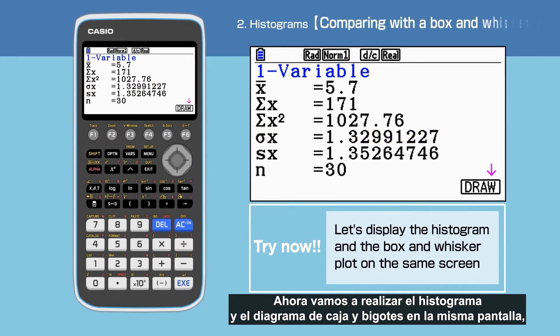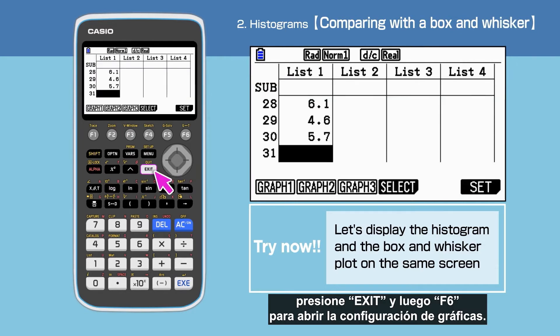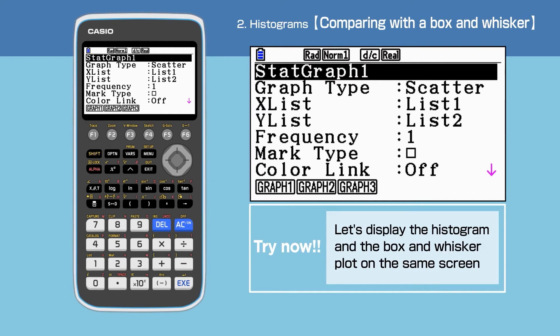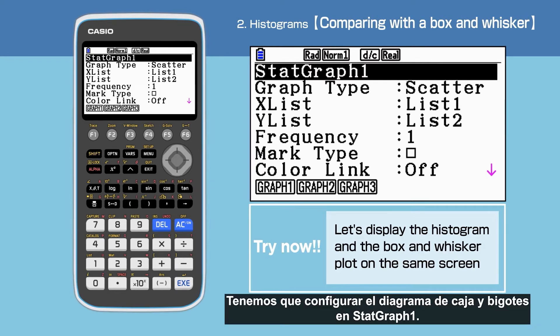Next, we will display the histogram and the box and whisker plot on the same screen. Press Exit, then F6 to open Graph setting. We set up the data for the box and whisker plot in Start Graph 1.